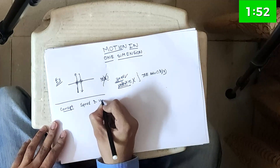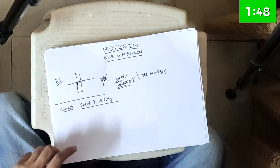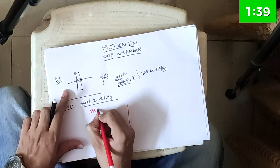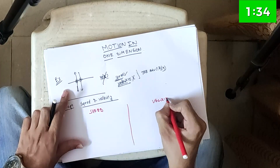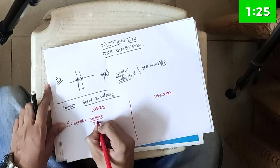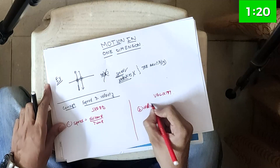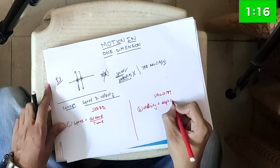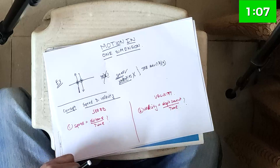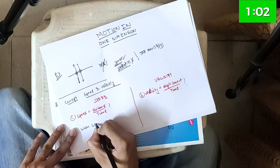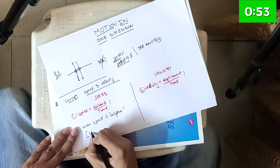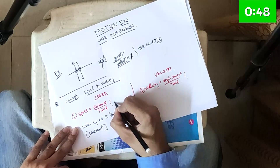Today's concept is on speed and velocity. What is speed? Speed is distance divided by time. What is velocity? Velocity is displacement divided by time. But tell me — when is this formula valid? This formula is valid only when the speed is uniform, meaning constant.